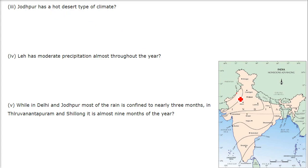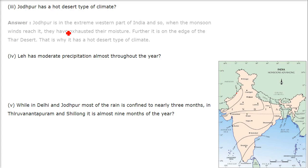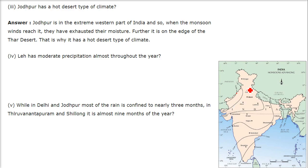Jodhpur has hot desert type climate. Jodhpur is in the extreme western part of India, so when the monsoon winds reach it they are already exhausted and have lost most of their moisture. Moreover, it is on the edge of the Thar Desert — that is why it has a hot desert type of climate.